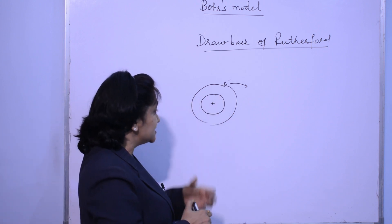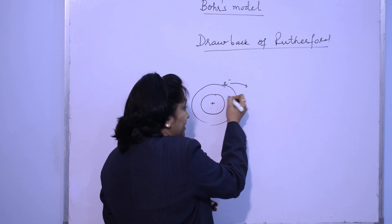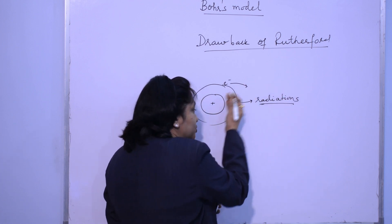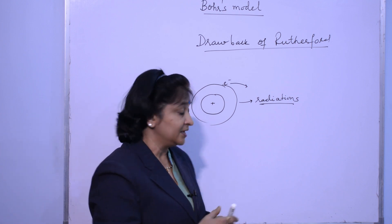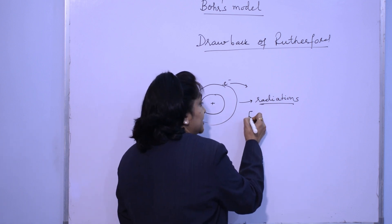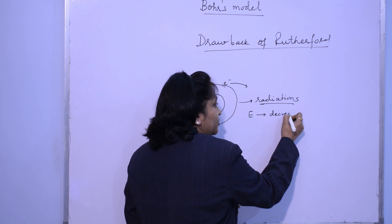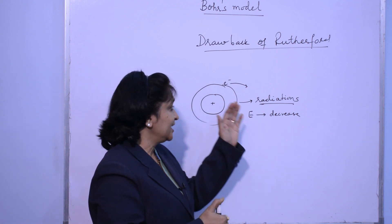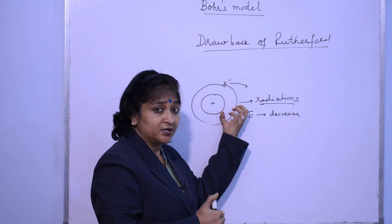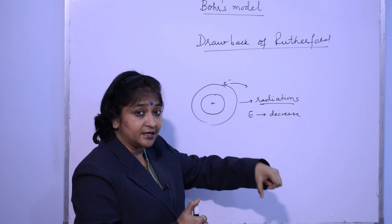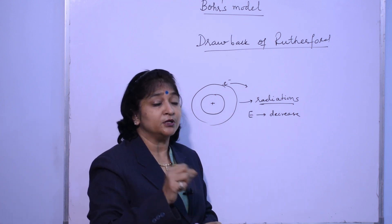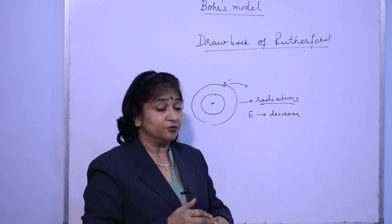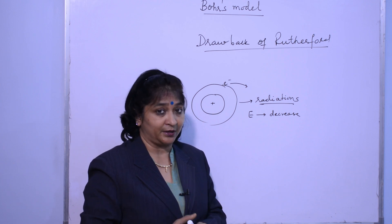The charged body will be attracted towards the nucleus, and when it is attracted towards the nucleus it will start giving out radiations. So when it gives out radiations, its energy will continuously decrease because it is attracted to the nucleus. Once it loses all its energy, the electron will fall into the nucleus — meaning the atom would be unstable. But the atom is not unstable, and Rutherford was not able to explain why the atom is stable.